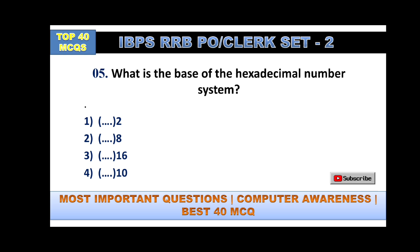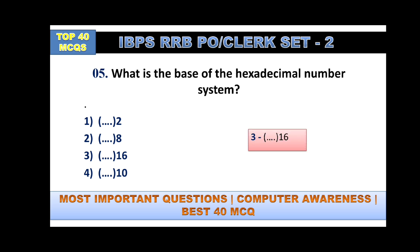What is the base of the hexadecimal number system? Option one is 2, which is for binary. 8 is used for octal. 16 is used for hexadecimal — option number three is the answer. And 10 is used for decimal.